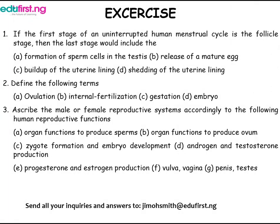The exercise. If the first stage of an uninterrupted human menstrual cycle is the follicle stage, then the last stage would include: A) formation of sperm cells in the testes, B) release of a mature egg, C) build-up of the uterine lining, D) shedding of the uterine lining. 2) Define the following terms: A) ovulation, B) internal fertilization, C) gestation, D) embryo. 3) Ascribe the male or female reproductive systems accordingly to the following human reproductive functions: A) organ that functions to produce sperm, B) organ that functions to produce ovum.